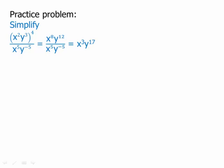Then we have to deal with the division. x to the 8th divided by x to the 5th — we subtract the exponents, giving us x cubed. y to the 12th divided by y to the negative 5th — that's 12 minus negative 5, which is 12 plus 5, which is 17. And that's why we get x cubed times y to the 17th.